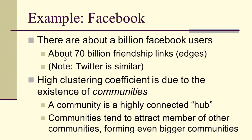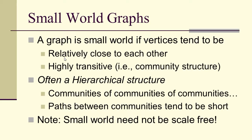Now, the high clustering coefficient is due to the existence of communities. A community is a highly connected hub. Communities tend to attract members of other communities, forming even bigger communities. So a graph is small world if vertices tend to be relatively close to each other, highly transitive, which means we get a community-type structure. And often this comes from a hierarchical structure: communities of communities of communities. And paths between the communities tending to be short. But again, small world need not be scale-free.